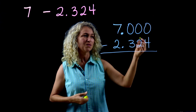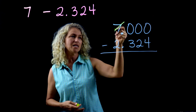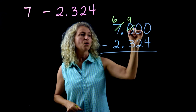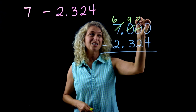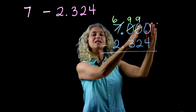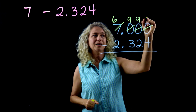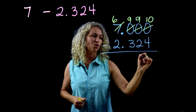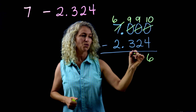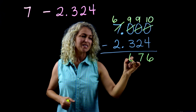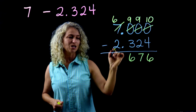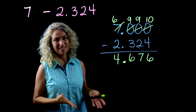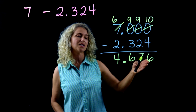Can you take four away from zero? No, so we borrow all the way. The seven becomes a six. As we cross each zero it becomes a nine, then we stop at a zero that becomes a ten. Ten minus four is six. Nine minus two is seven. Nine minus three is six. Six minus two is four.